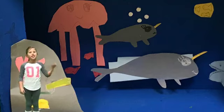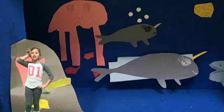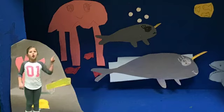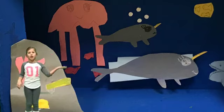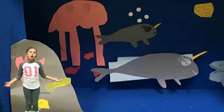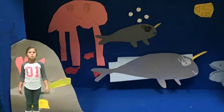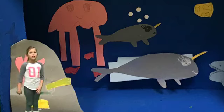The narwhal's horn is actually a tooth. The narwhal looks like a cross between a whale and a unicorn with its long spiral tusk jutting out of the narwhal's head.